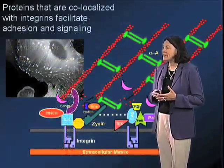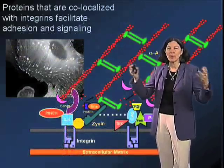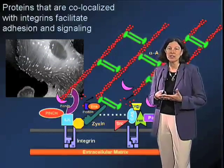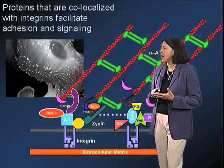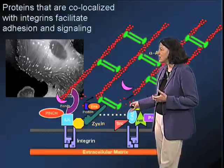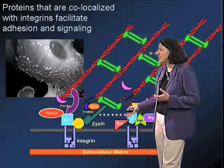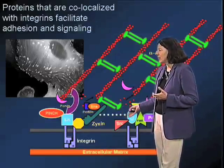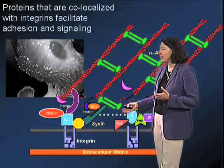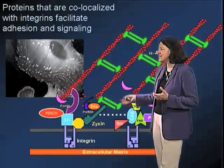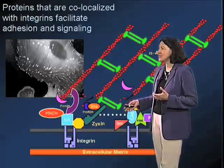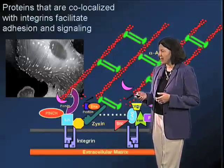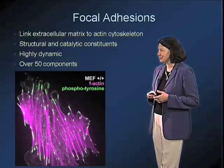Rather, they seem to operate by recruitment of a large collection of cytoplasmic proteins to the cytoplasmic face of the plasma membrane, and it's these proteins which really facilitate integrin signaling function.